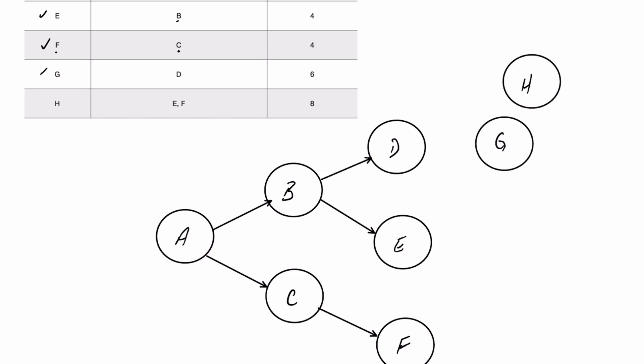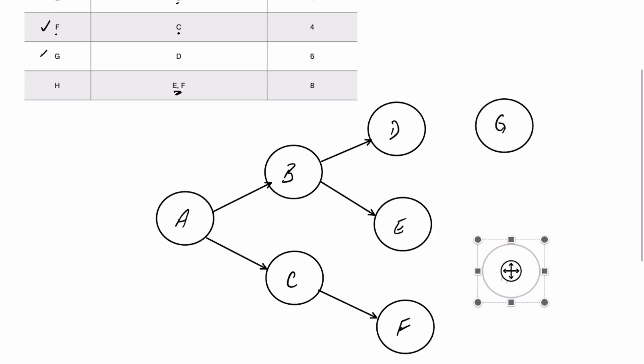And then Activity H has both E and F as immediate predecessors. So we'll grab Activity H, put it somewhere about there so it looks something like that, and then we will join them.